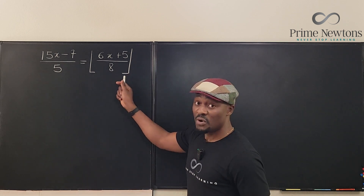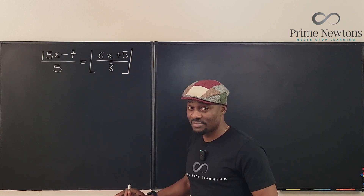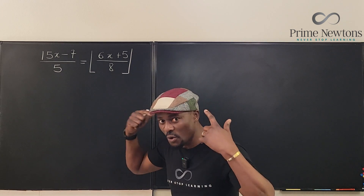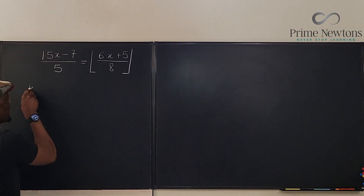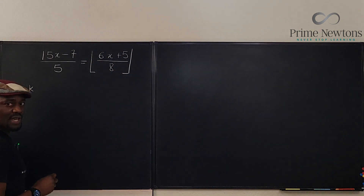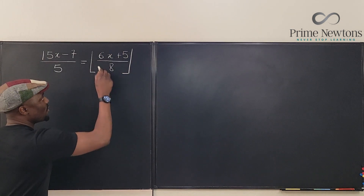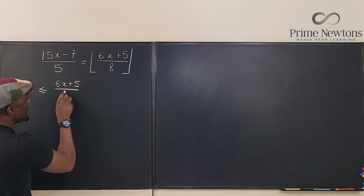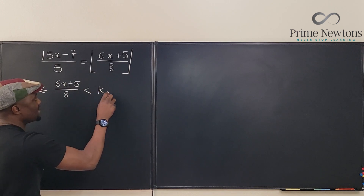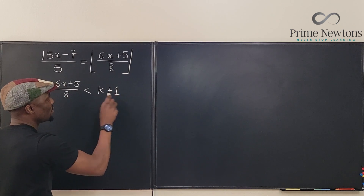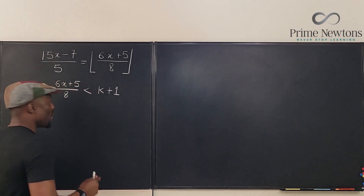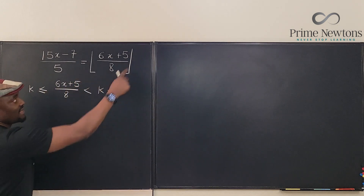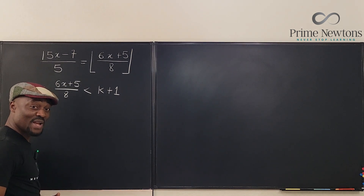We know that the floor of anything is always an integer — always an integer. So, we're going to write the relationship between the integer and this expression. Note in your head that this floor is equal to k. When you compare it to what is inside, k is less than or equal to (6x + 5)/8, and this is always less than its own ceiling, which can be written as k + 1. We also know that (15x − 7)/5 equals k, because that is the floor of this side. Those are the two things you need to get your answer.